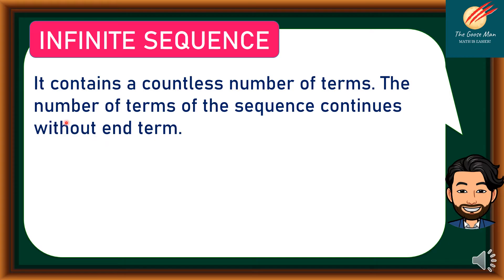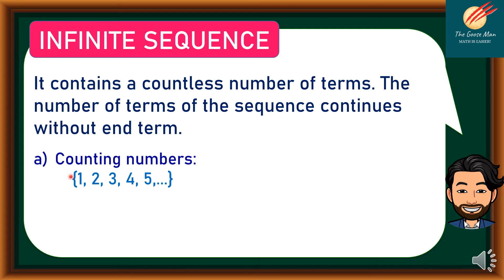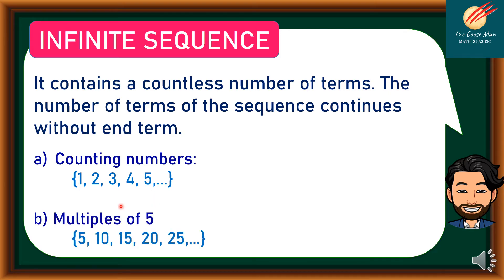An infinite sequence contains a countless number of terms — the number of terms continues without end. For example, counting numbers: 1, 2, 3, 4, 5, and so on. Another example is multiples of 5: 5, 10, 15, 20, 25, and so on and so forth.